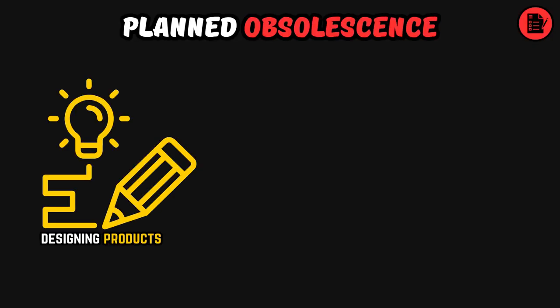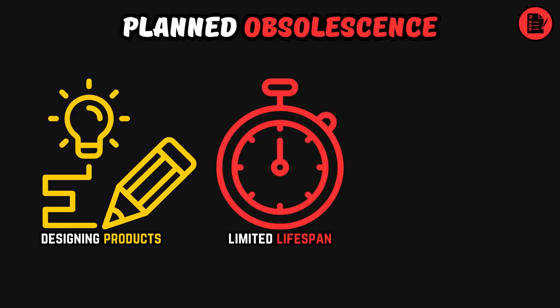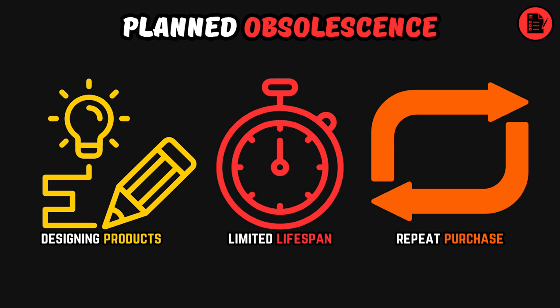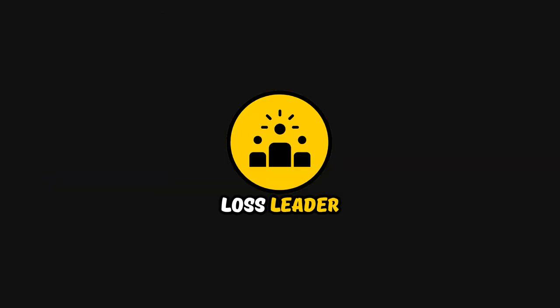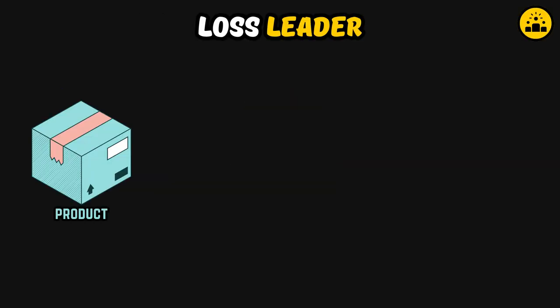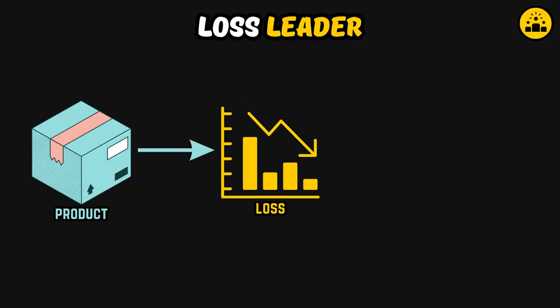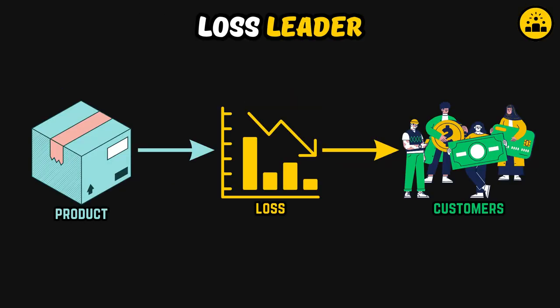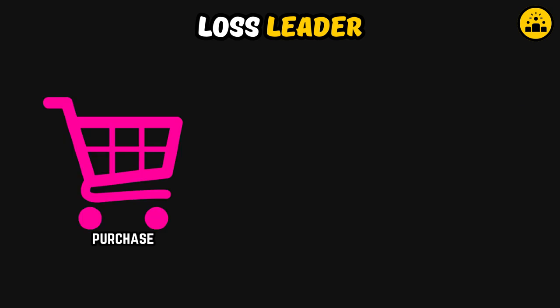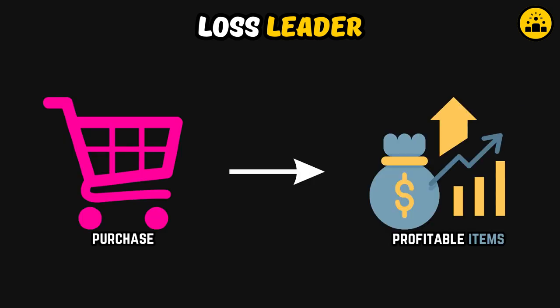Planned obsolescence: intentionally designing products to have a limited lifespan, which encourages repeat purchases. Loss leader: offering a product at a loss to attract customers who are likely to purchase additional profitable items.